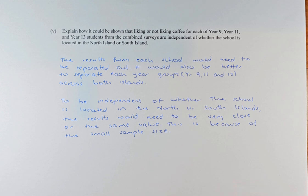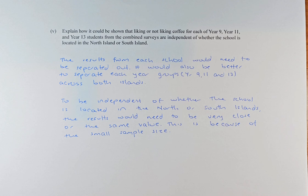I would suggest that the result for each school would need to be separated, and that it would also be good to separate the year 9, year 11 and year 13 separately from both islands. So to be independent on whether the school is located in the North or South Island, if you reckon that it's going to be independent, the result has to be the same. If the results are very, very close or even are the same, then you can combine the results together.